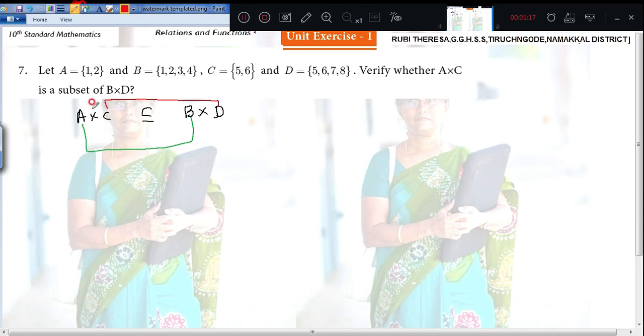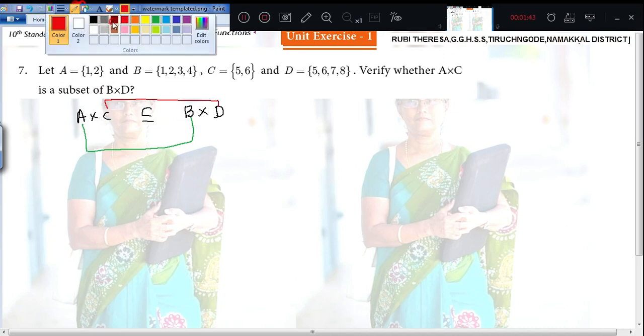Variable you can say that by seeing this, you can say the answer that A cross C is the subset of B cross D. Because just you find the ordered pairs of A cross C, this is 4 elements. 1 and 2 is here in A itself. 5 and 6 what it is given in D, it is also in C.